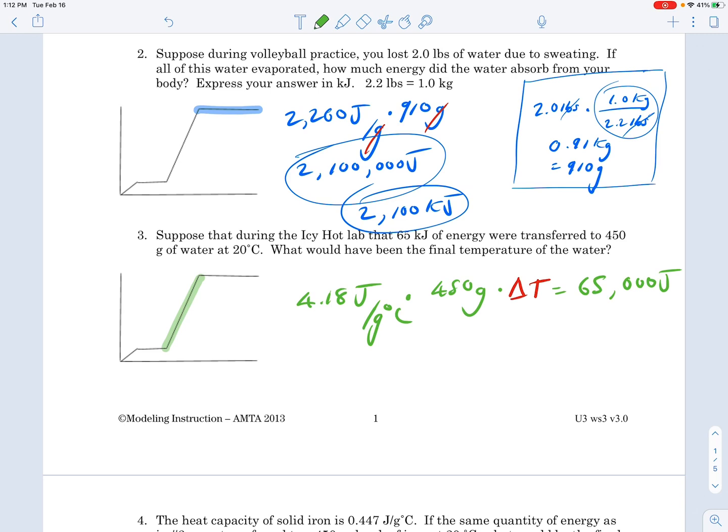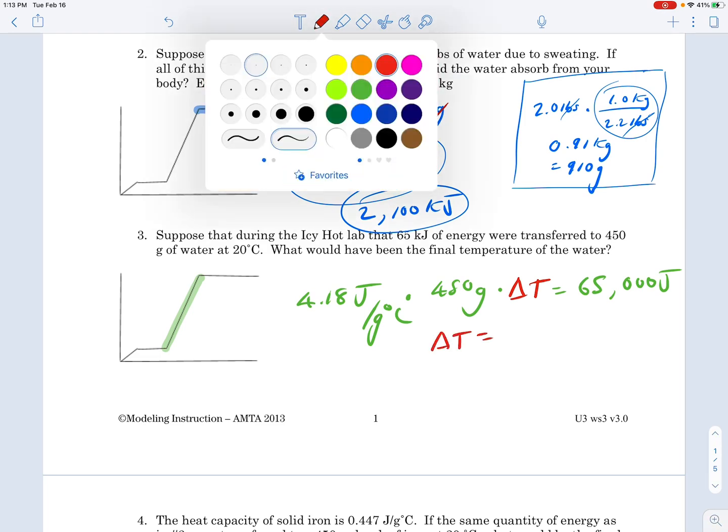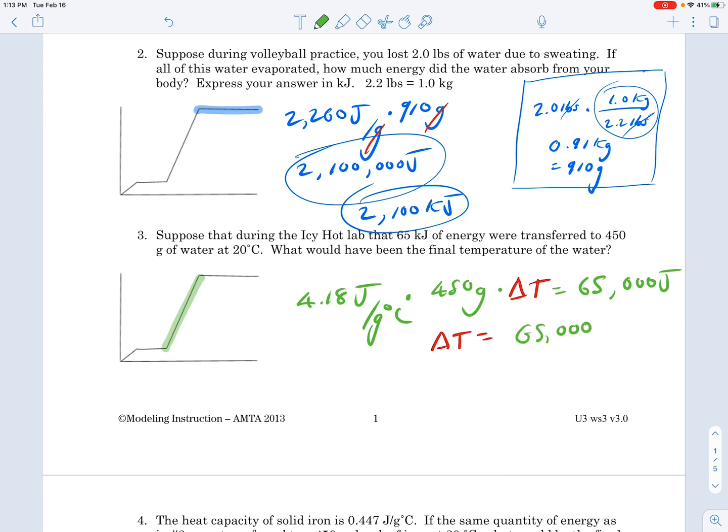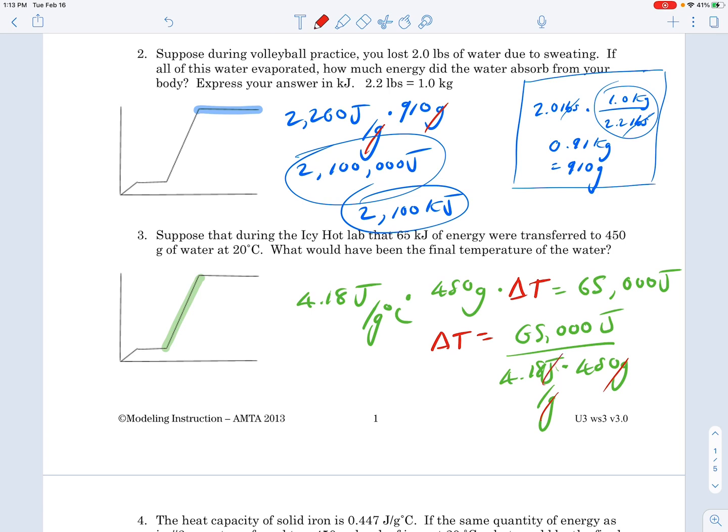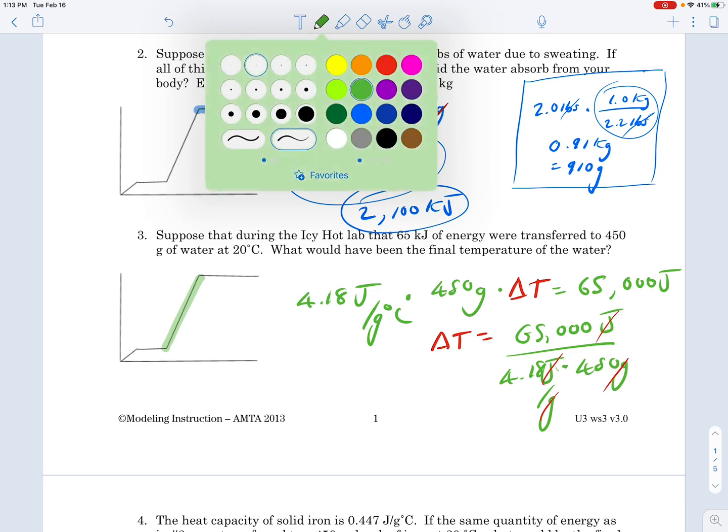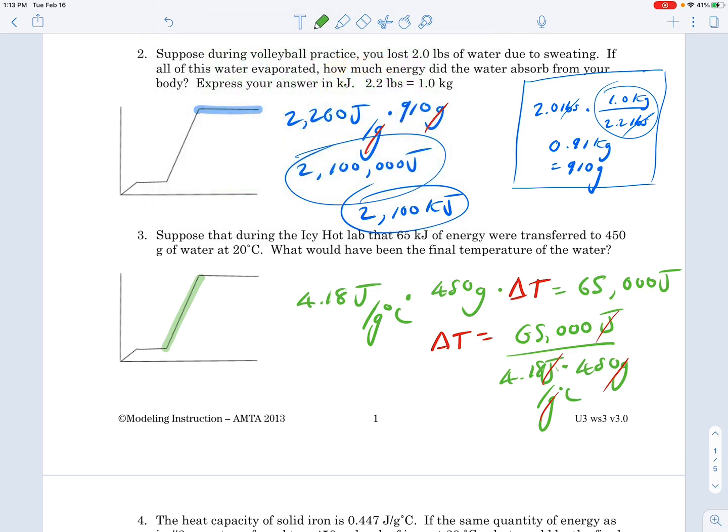The change in temperature equals 65,000 over 4.18 times 450. You can see that is joules, that is joules over grams, and that's grams. So grams are going to cancel, the joules will cancel, and we're going to be left with degrees Celsius because it's 4.18 joules over grams degrees Celsius.